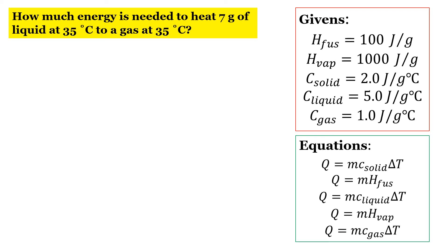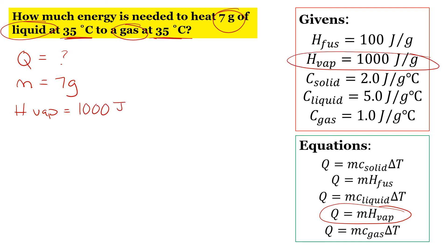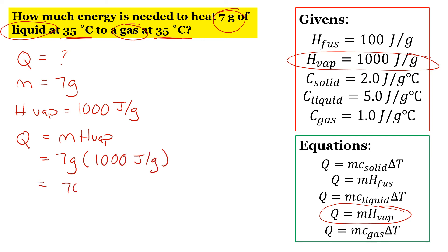Let's do one more. How much energy is needed to heat 7 grams of liquid at 35 degrees to a gas at 35 degrees? The temperature is not changing, and we're going from liquid to gas — that tells us we're changing phases, so we need the heat of vaporization equation. Any time you go from liquid to gas or gas to liquid, you need the heat of vaporization. The mass is 7 grams, and the heat of vaporization is 1,000 joules over grams. 7 grams times 1,000 joules per gram gives us 7,000 joules.